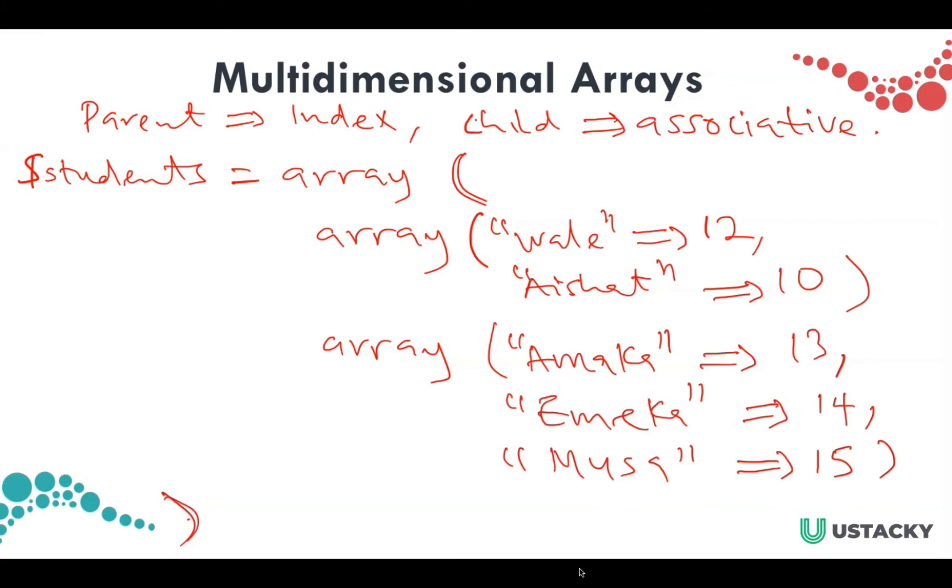You can see that these elements are index array. The index of this is zero and index of this is one. But the value is also an associative array, and this is also an associative array.